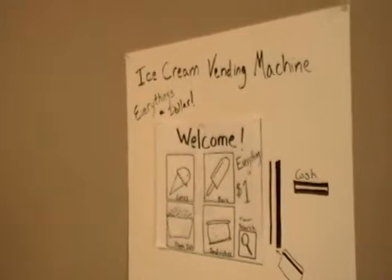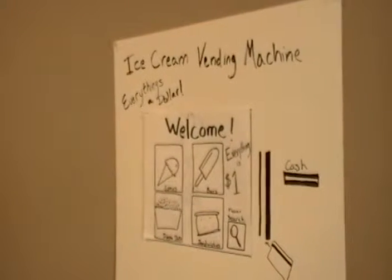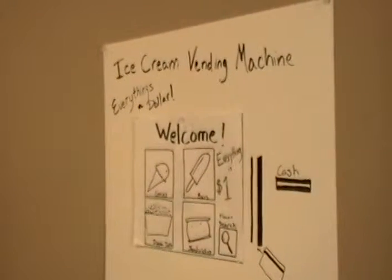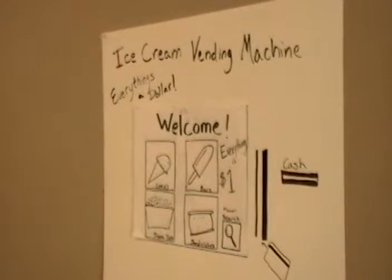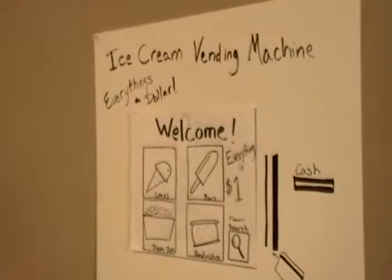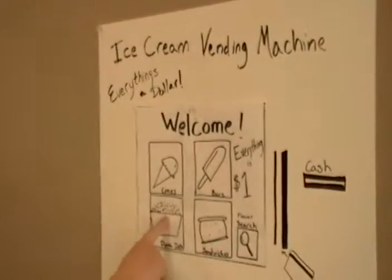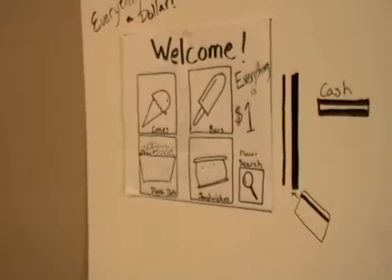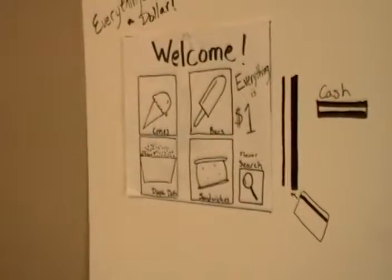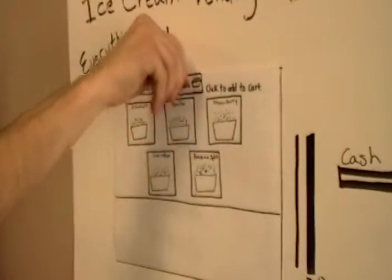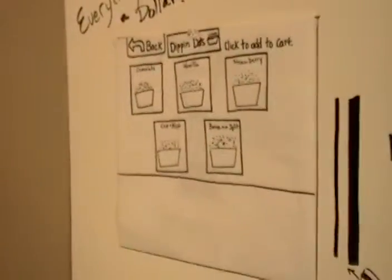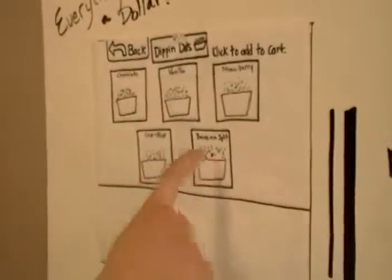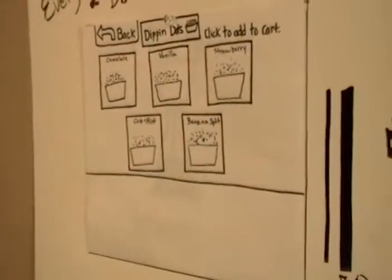Purchase any two items from any two categories and proceed to checkout. Okay, I'm going to click Dippin' Dots. They're tasty. And I'm going to click Banana Split.